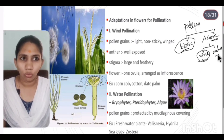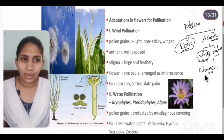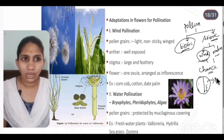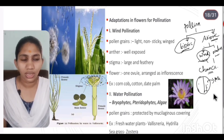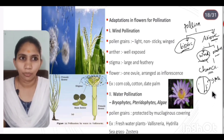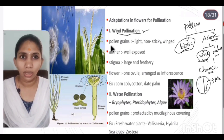Wind and water are abiotic pollination agents and work by chance. Because of the chance factor, the number of pollen grains produced from the anther is enormous — a huge amount of pollen grains compared to the number of ovules. Wind pollination is the most common abiotic pollination.